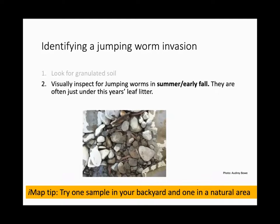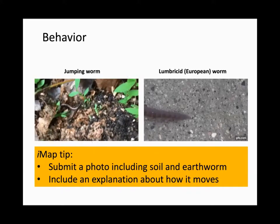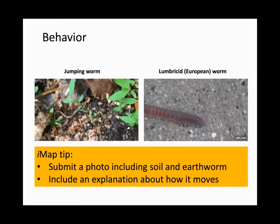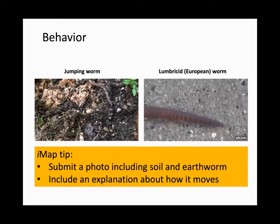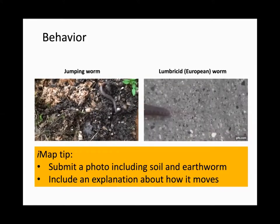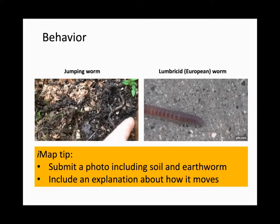You can also look for the worms themselves from now into early fall — they live right on the leaf litter or just below the surface. Their behavior is a really clear indicator: jumping worms have a back-and-forth thrashing, snake-like behavior along the soil surface, while European worms move by expanding and contracting their segments. This difference in behavior is a very strong indicator of which species you have.